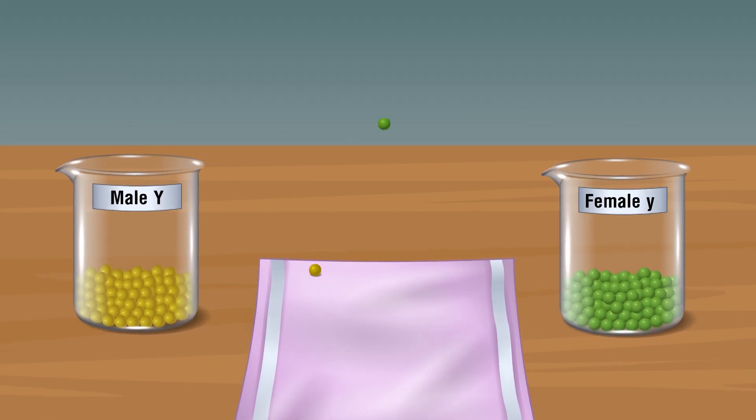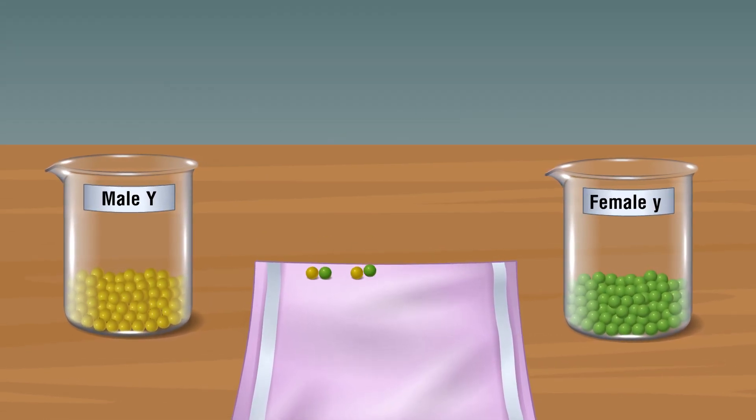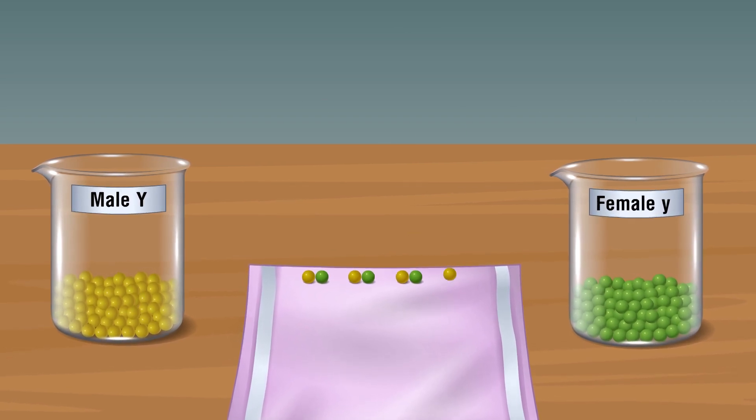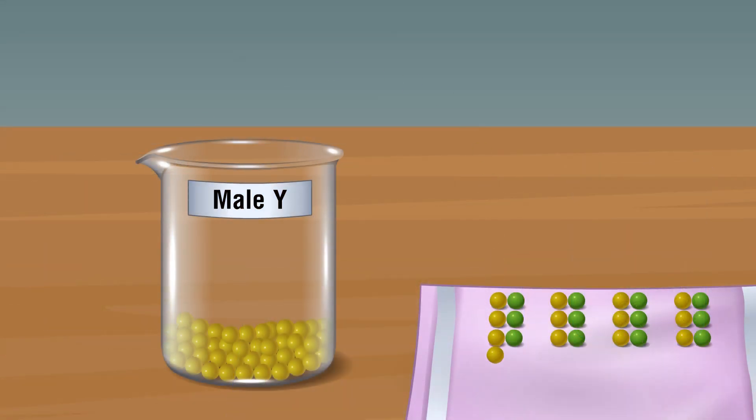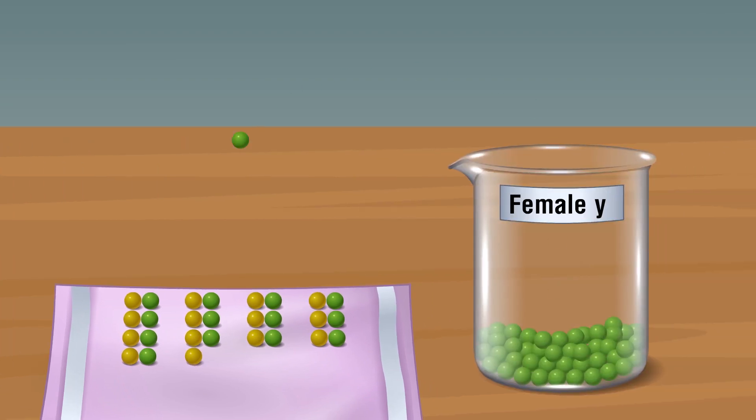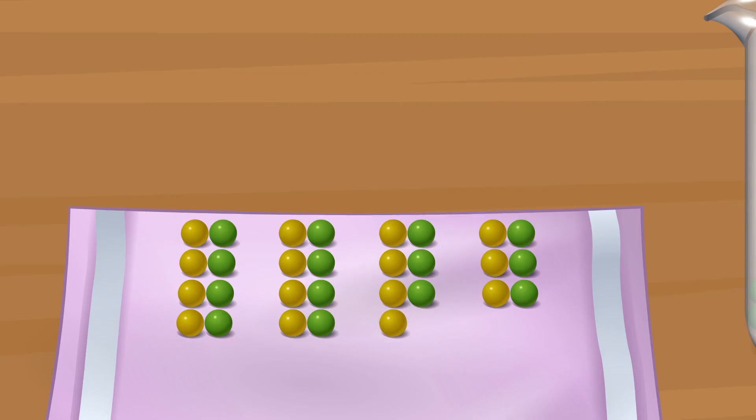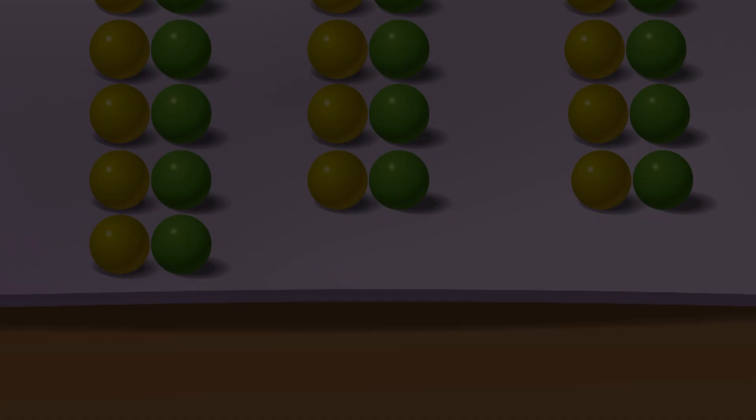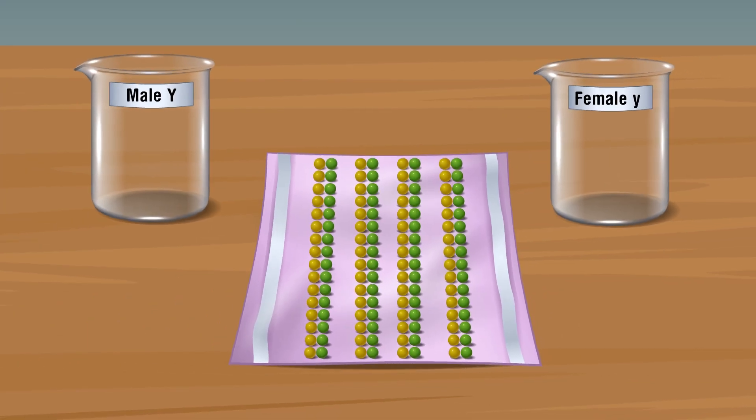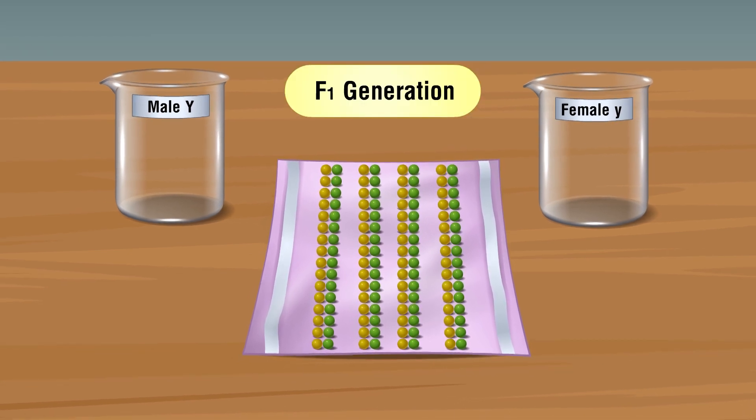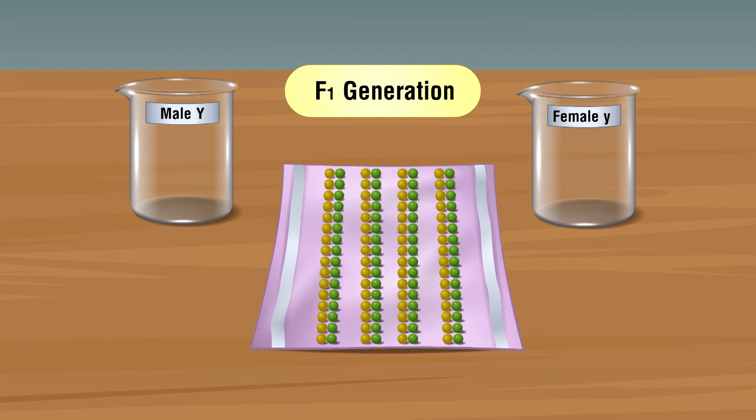Start to take the beads from each beaker and make them as pairs, yellow or green. Arrange all the 64 set of pairs in a towel. Reminder: This is a heterozygous of the F1 progeny.